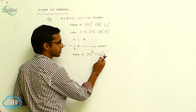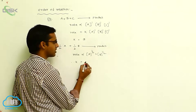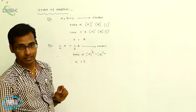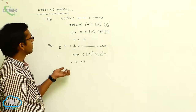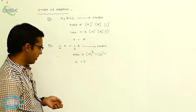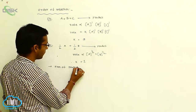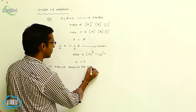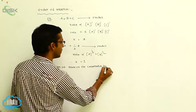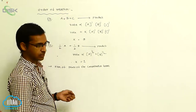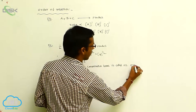So half plus half equals one, meaning the rate of reaction depends on one concentration term — that is your first order reaction. The sum of powers of the concentration terms is called the order of reaction.